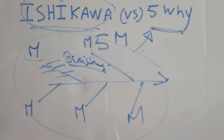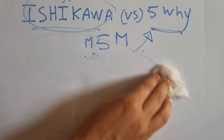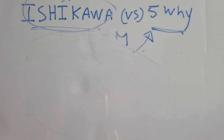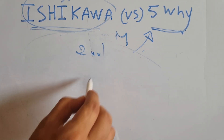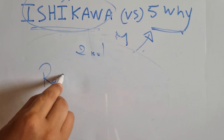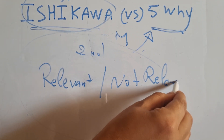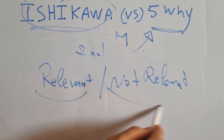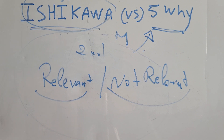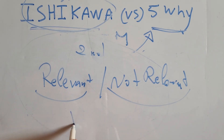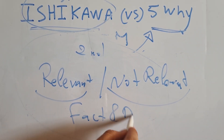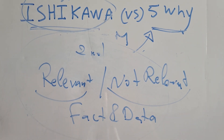Once you finish the brainstorming, you start the second step: selecting what can be relevant and what cannot be relevant. For every potential cause proposed during the Ishikawa, the team should decide if it could be relevant or not.